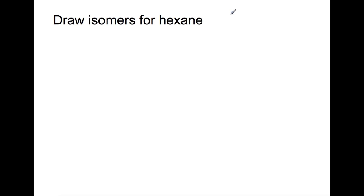So let's start with the molecular formula for hexane, C6H14. So the most straightforward isomer is where we have the 6 carbons in a row. So there is hexane.